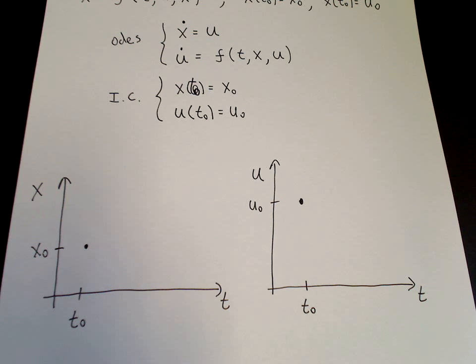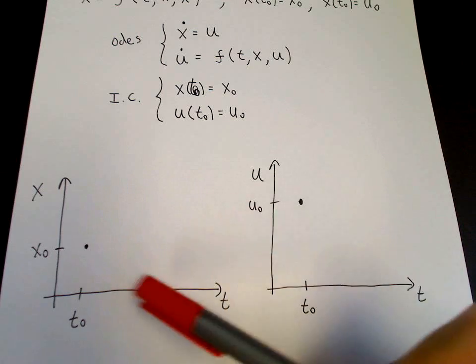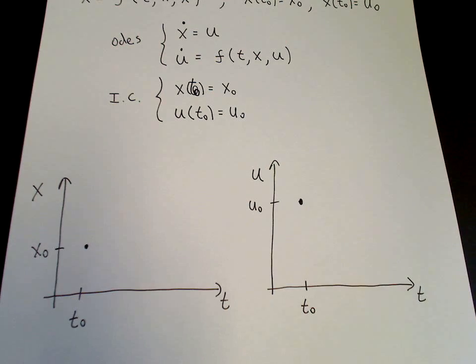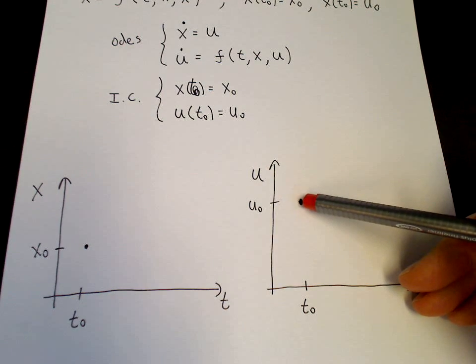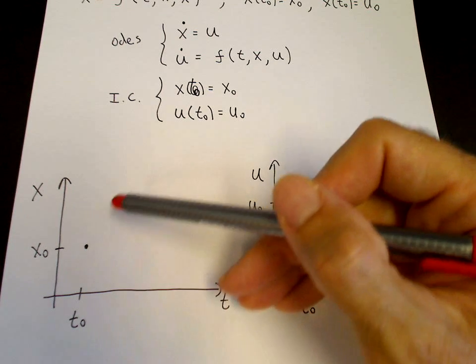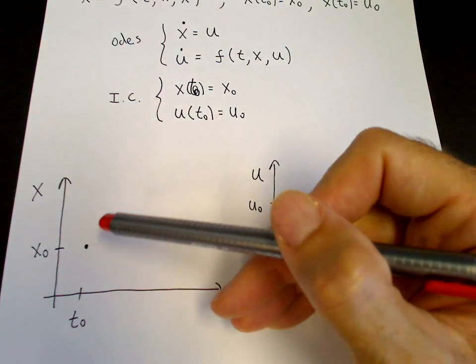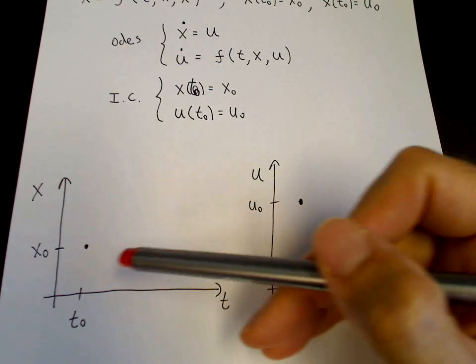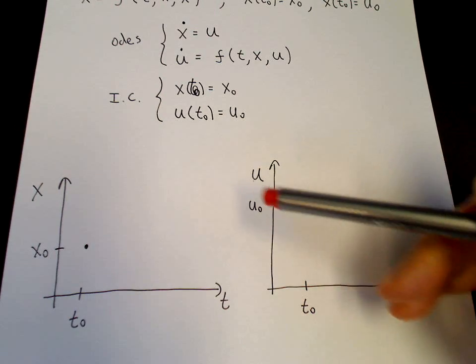And then the differential equation will give us the slope of the tangent line to the solution x of t and u of t at the point t naught, just like in the first order Euler equation. So the solution may go in some way. Here, because I've defined u naught to be positive, that means x dot is positive so x is increasing. So the solution has to be increasing here because of the way I drew u naught, and then it can be increasing and turn over.